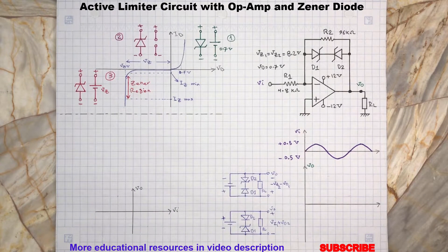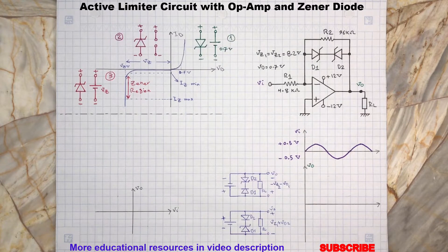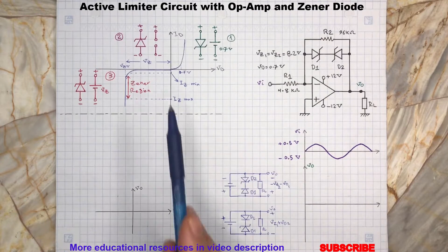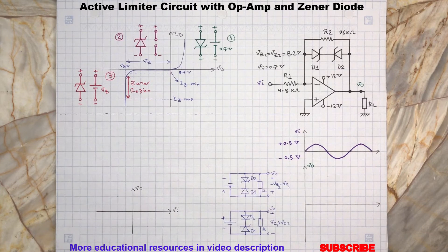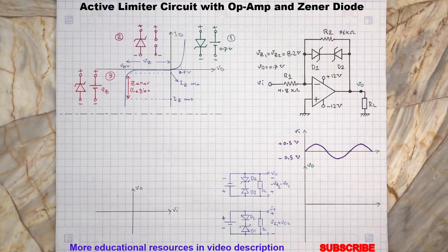In this region, the Zener diode will be off and there will be a very small leakage current flowing from cathode to anode. In most electronic applications, we neglect this small reverse leakage current.